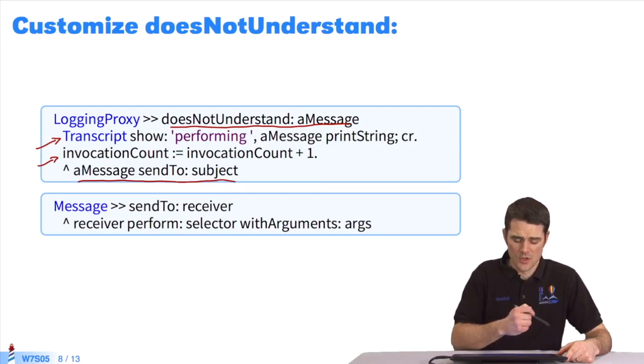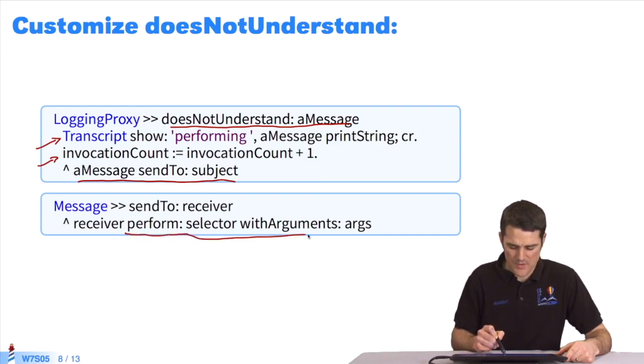Like before, we redirect the message elsewhere. For sendTo, as you see in the message class implementation, we simply use the perform method with arguments. We already explained this in an earlier course.